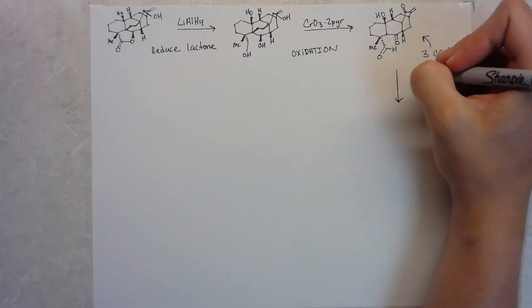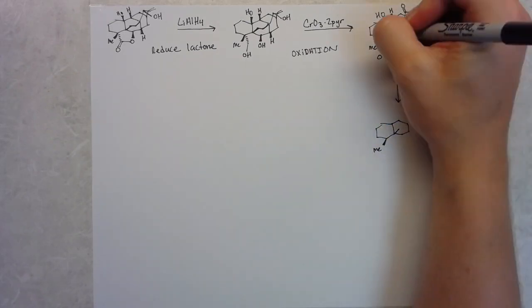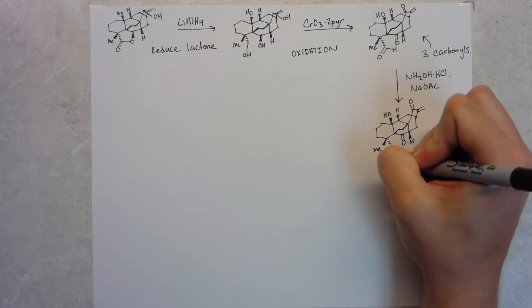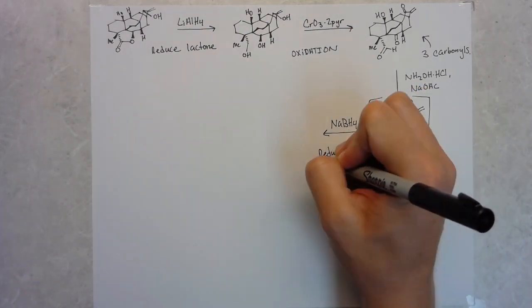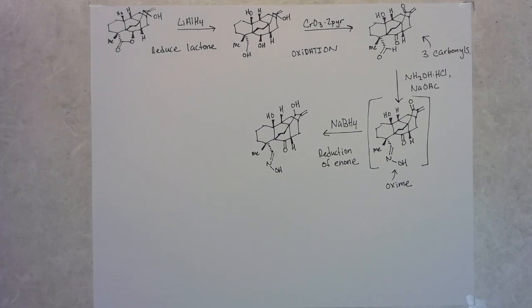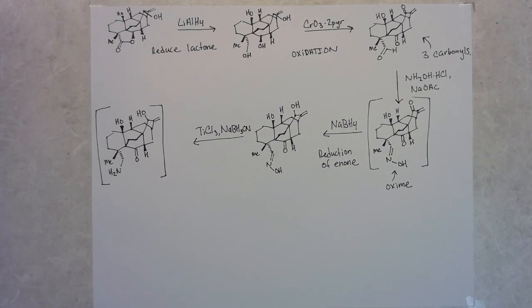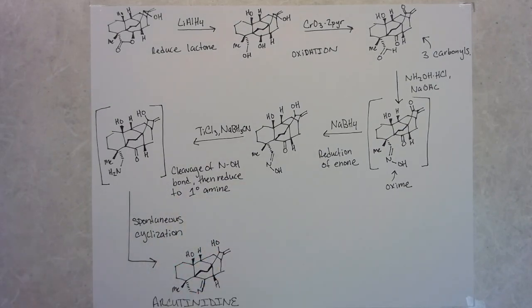In the next step, they do a lithium aluminohydride reduction of the lactone to open it, leaving them with two alcohols. Then they globally oxidize the molecule, giving them an aldehyde, a ketone on the single ring, and oxidizing that alcohol they installed in the wrong diastereomer on the 2-2-2-bicycle, using chromium oxide. Over the next steps, the authors selectively react with each of these carbonyls. They start by doing a condensation with hydroxylamine to the aldehyde. The formation of this oxime installs the requisite nitrogen to form the proline cycle. After the condensation, they use sodium borohydride to both reduce the enone to the alcohol, and here they get the desired diastereomer. The oxime is reductively cleaved with titanium trichloride and sodium cyanoborohydride to the corresponding amine, which then cyclizes spontaneously, and this yields arcutinidine, the natural product.